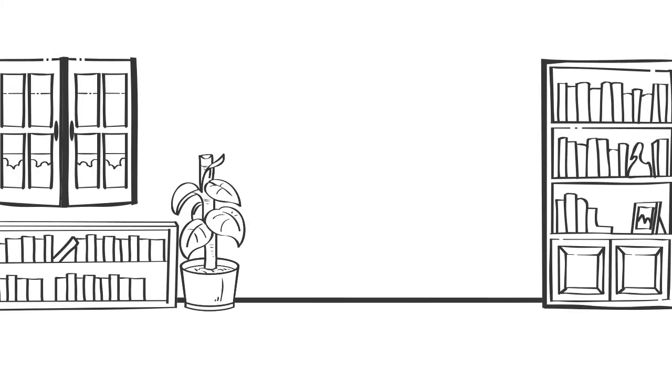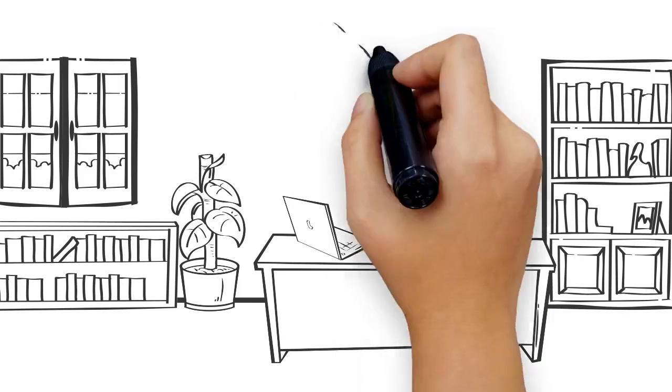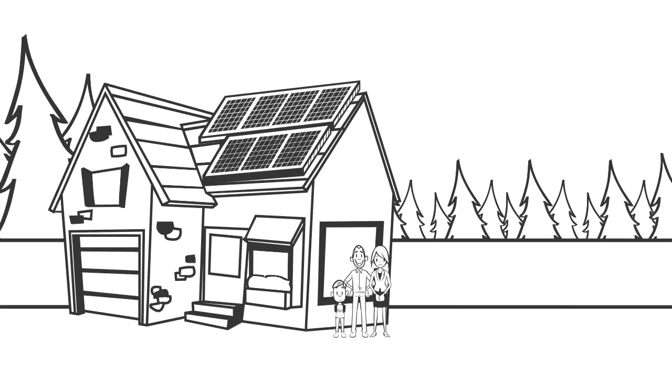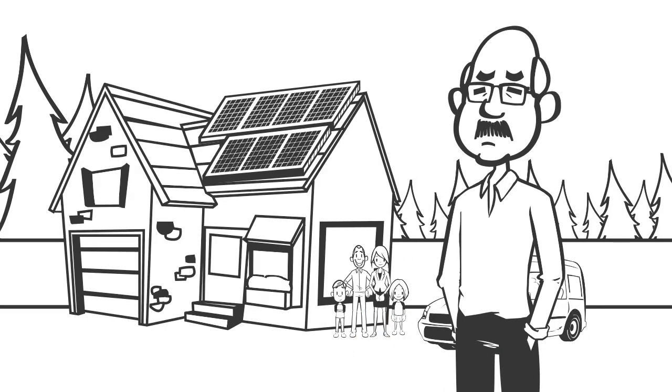Hence, he started to think about an alternative. Suddenly, Mr. Robert keeps his eyes on his neighbor's house and finds photovoltaic solar panels on the rooftop.